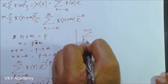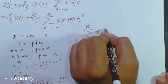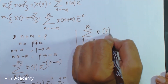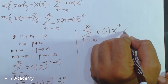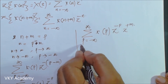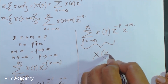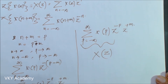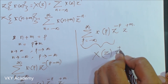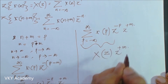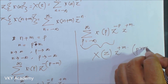Finally, summation p equal to minus infinity to infinity of x of p times z to the power minus p is the X of z or Z transform function, multiplied by z to the power plus m. Hence it is proved.